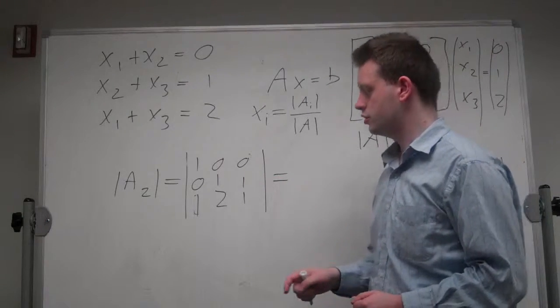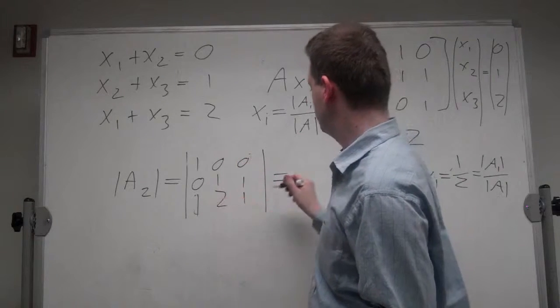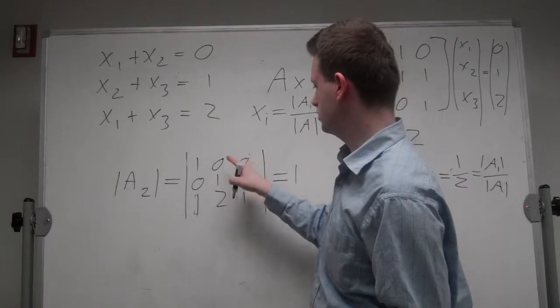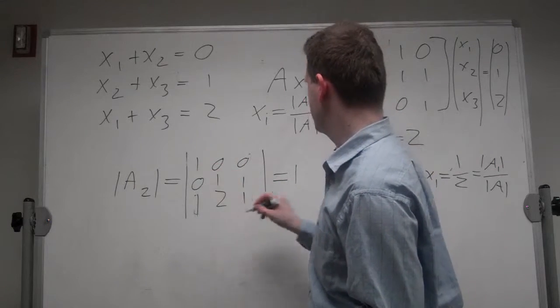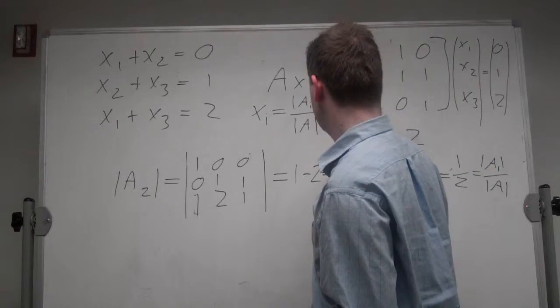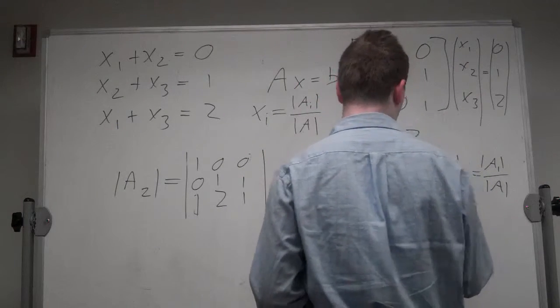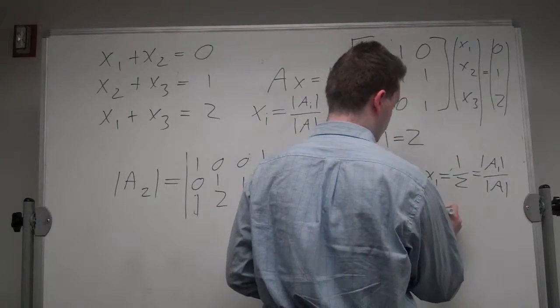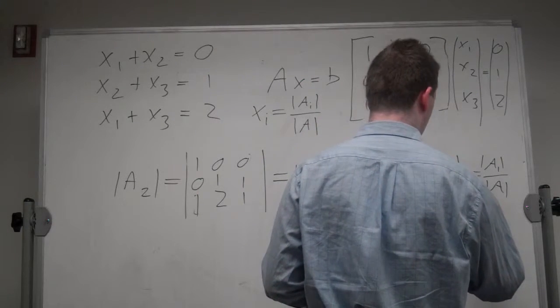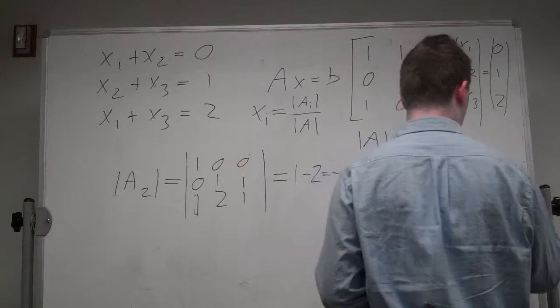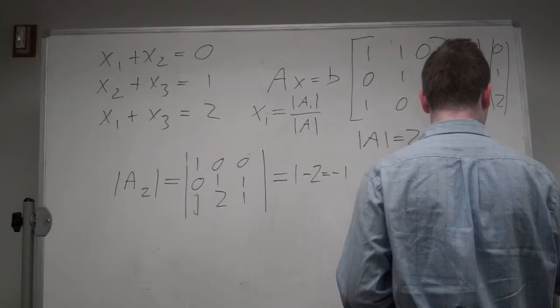So to calculate this determinant, we have 1, 0, 0, minus 0, 0, 2, which is equal to minus 1. And we've calculated the same way, x2 is equal to minus 1.5, which is equal to the determinant of A2 over the determinant of A.